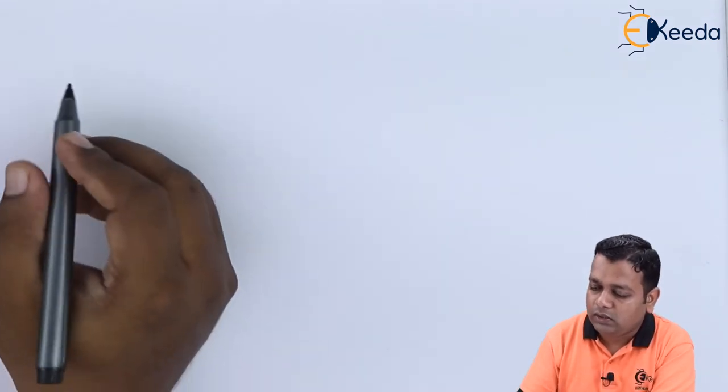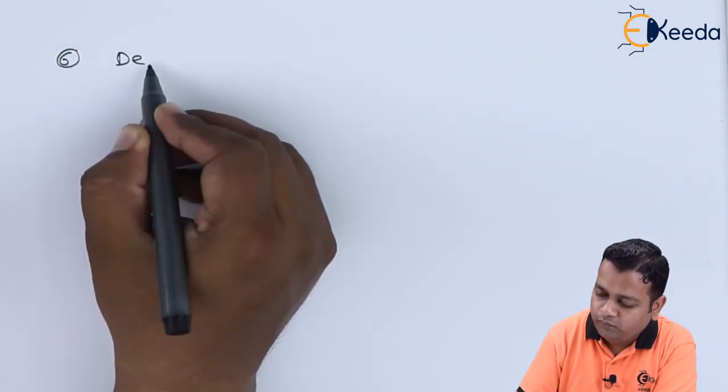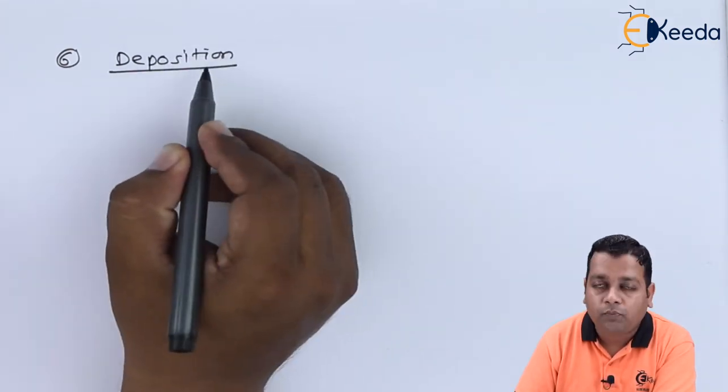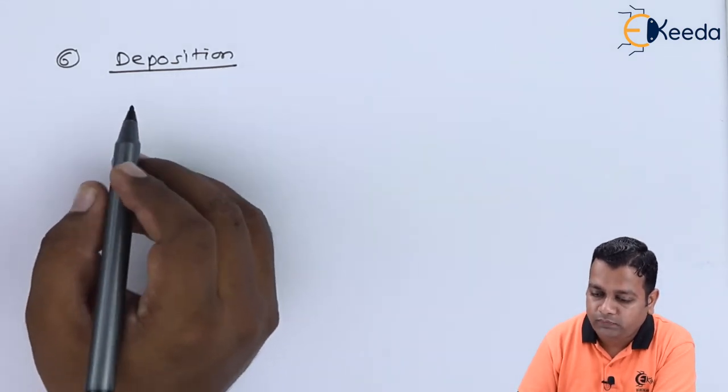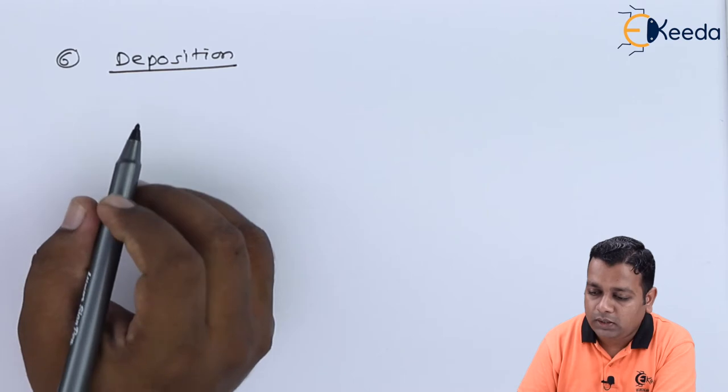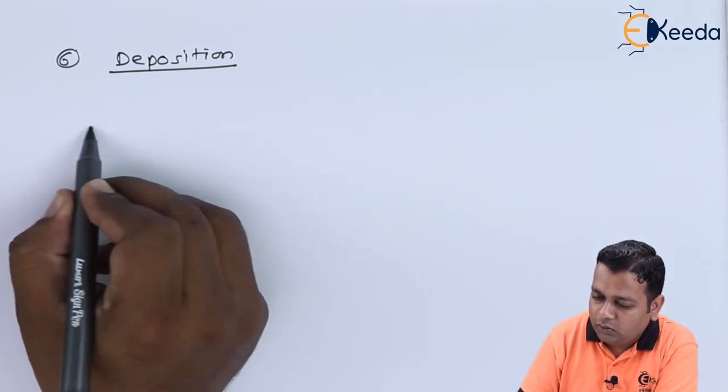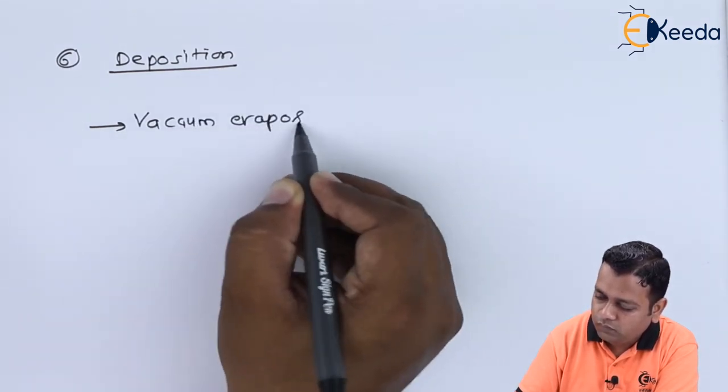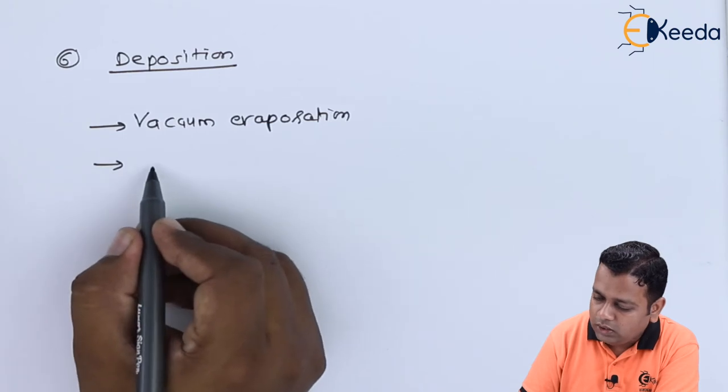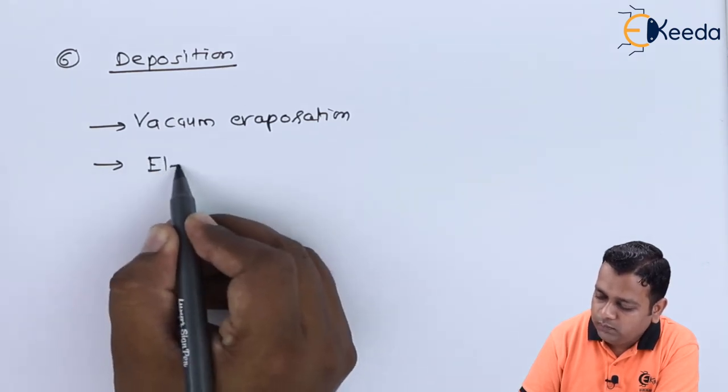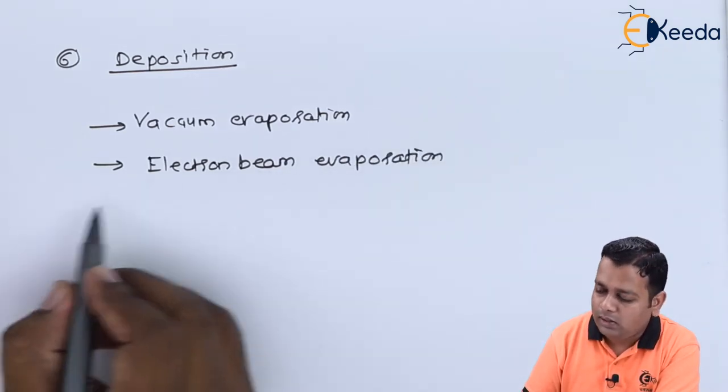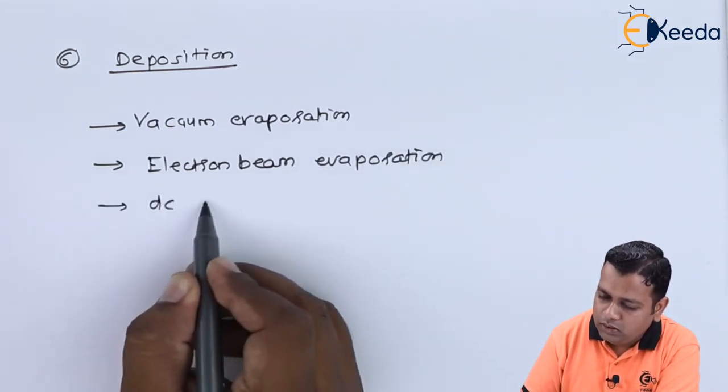Now the sixth type of fabrication method can be given as deposition. For the deposition we have three subtypes commonly used for making of the MMICs. These are called vacuum evaporation. Next to that we can have electron beam evaporation. And lastly we have DC sputtering.